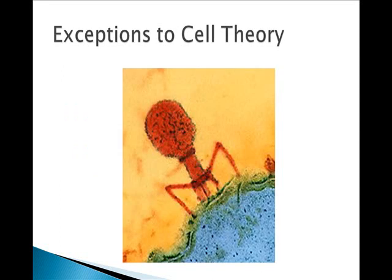However, there are a few exceptions. Viruses aren't made of cells but do show one characteristic of life — reproduction — but it can only happen in a host cell. So they're not alive, and you can't really kill a virus; you can inactivate it, but you can't kill it because it wasn't alive to begin with. You do need to know that viruses are considered an exception to cell theory. Prions and viroids are also considered cell theory exceptions.